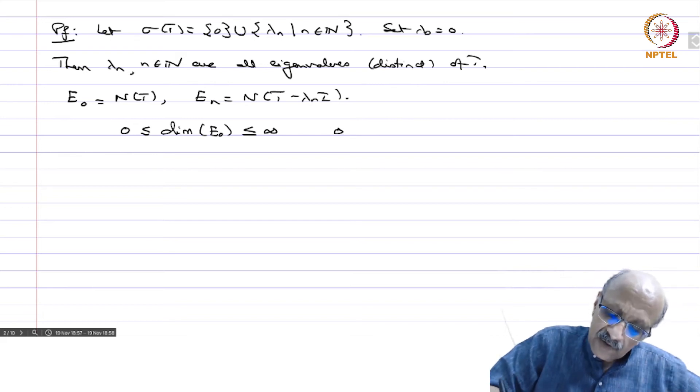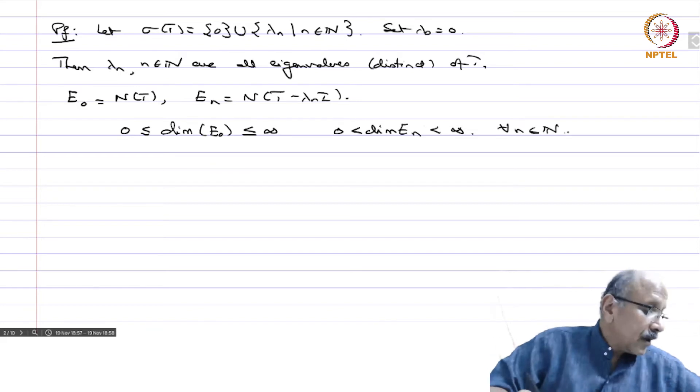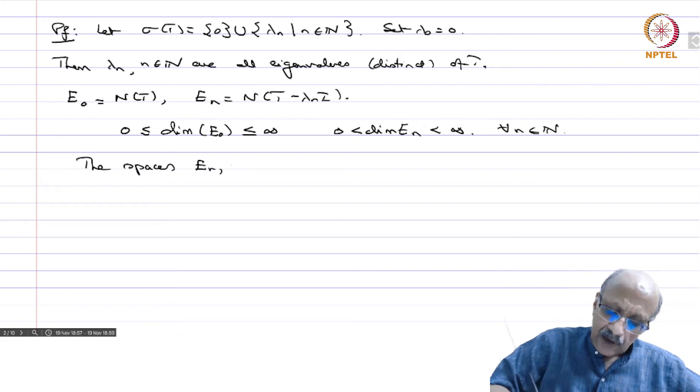On the other hand 0 will be strictly less than dimension of E_n and that will also be strictly less than infinity for all n in N. The spaces E_n, n ≥ 0 are all mutually orthogonal.